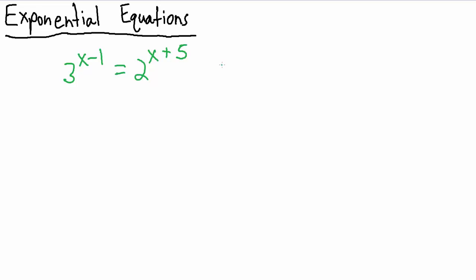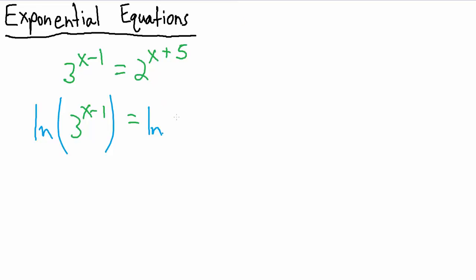That's going to make things a little bit more difficult, but what we can do is start by taking a logarithm of both sides. You might be tempted to take a base 3 or base 2 log to simplify one side, but I would advise against that because chances are you'll need to put your answer into a calculator, and that's going to be a lot easier if your answer is already in terms of natural logs or common logs. So I always use the natural log. Let's take the natural log of both sides: natural log of 3 to the x minus 1 equals the natural log of 2 to the x plus 5.